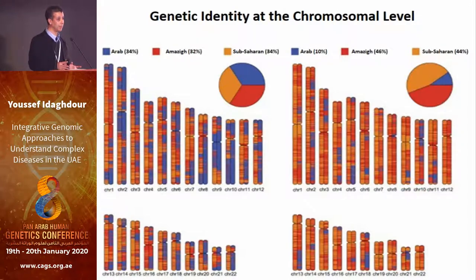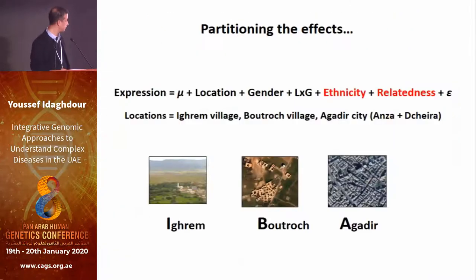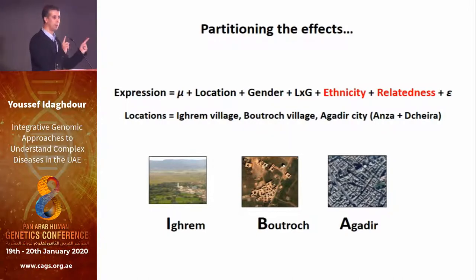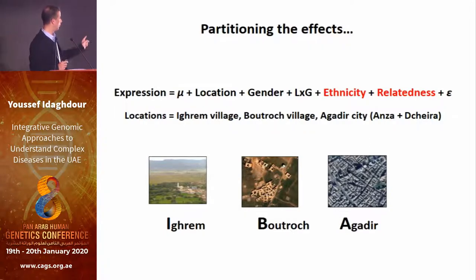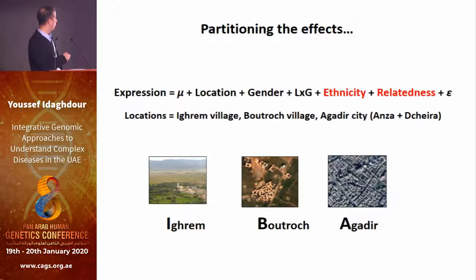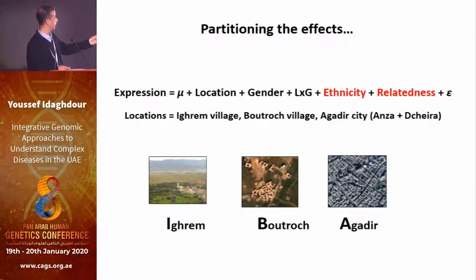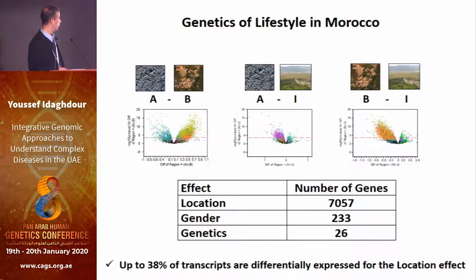Admixture is a big issue — it also gives you power for mapping, but you have to consider it in your analysis. To show you results: we focused on three comparisons. When we compared the two urban populations, the two sites I showed, we couldn't see any differences, so we combined them as the Agadir sample. We did statistical genetic analysis looking at gene expression using microarray data, accounting for location effect, gender, location by gender, ethnicity, and relatedness.